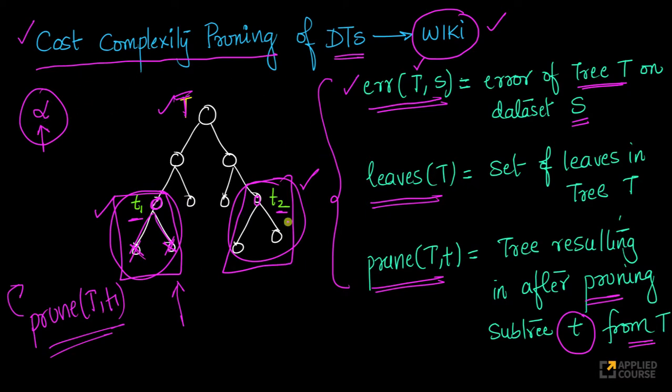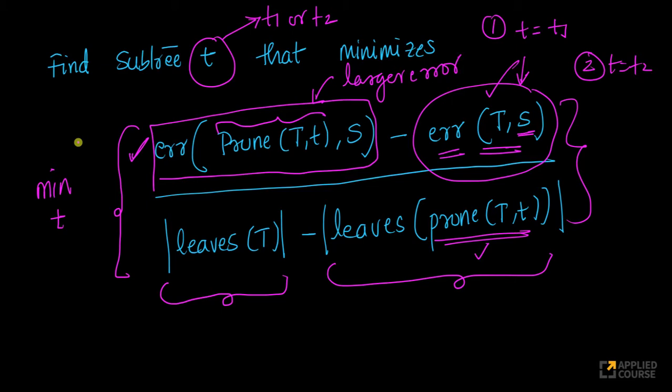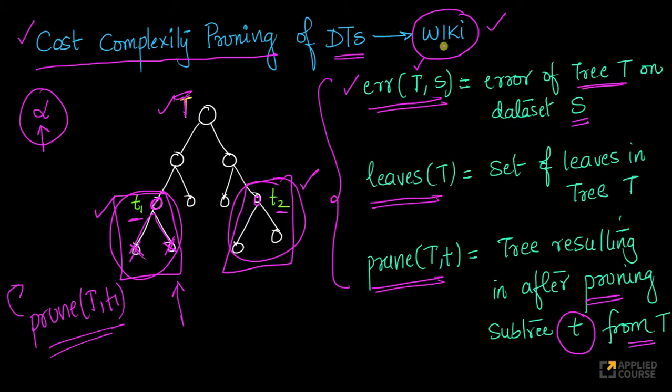This is how cost complexity pruning of decision trees, this is how you choose which subtree to prune. It's a very nice simple metric. This thing is, this link is available on Wikipedia also. So, you can just go to Wikipedia and just type cost complexity pruning of decision trees Wikipedia, you'll get this equation. I've taken the Wikipedia link so that you can go and read it from Wikipedia also. I hope this clarifies your question.